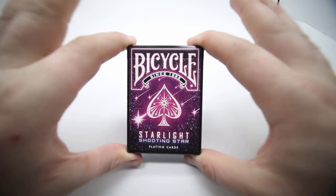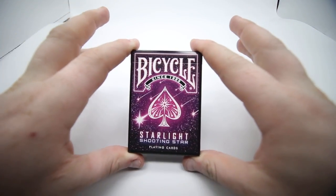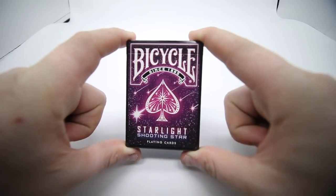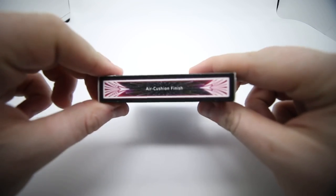What I like about this first of all is the coloring. I love the purple and the shooting star effect is really cool. It has Bicycle since 1885 and Starlight Shooting Star playing cards on the side.